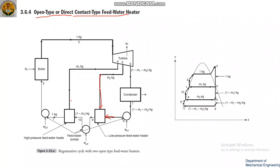In an open type feed water heater, there will be two stages to achieve boiler pressure. One stage has a low pressure feed water heater and another has a high pressure feed water heater. Water coming from the condenser is pumped to the low pressure feed water heater.